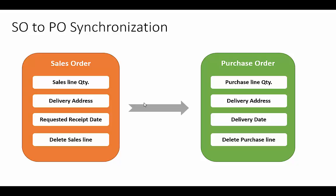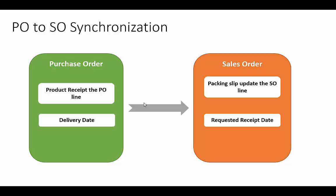We will review the product demonstration for the same. Similarly, if we product receipt update the purchase order, whether fully or partially, it will packing slip update the sales order accordingly. Also, if we change the delivery date on the purchase order, it will change the requested receipt date on the sales order line.